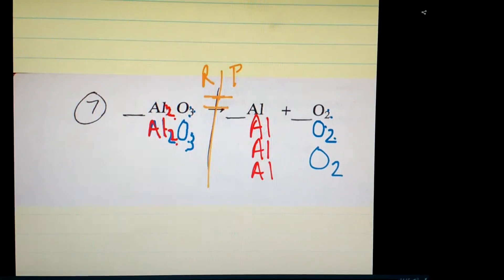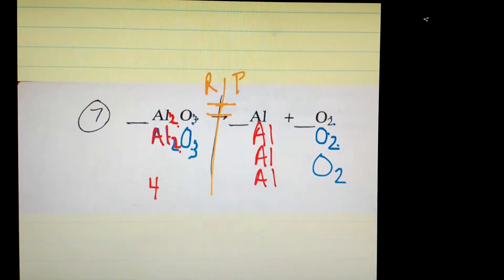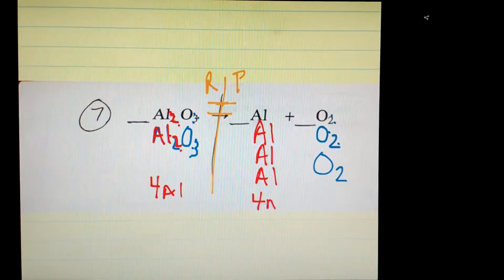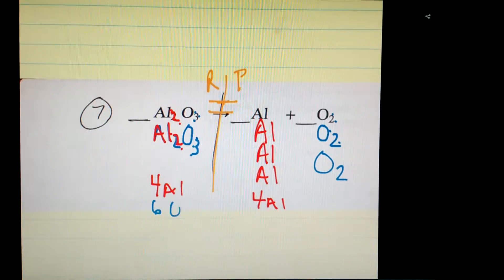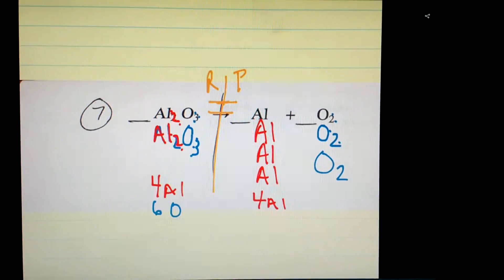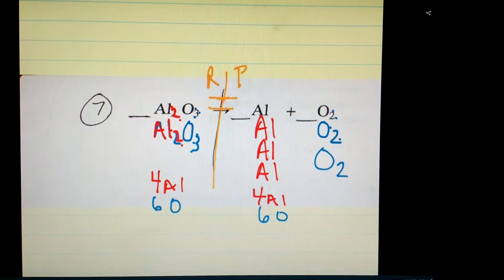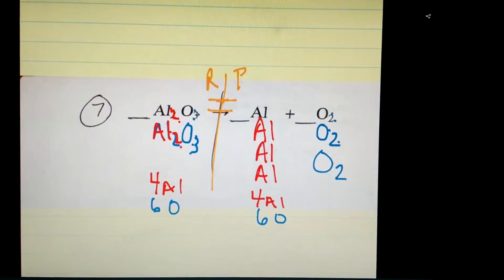Double check everything. Notice that we've still not written any coefficients yet. You have four aluminums on the reactant side, four aluminums on the product side. You have a total of six oxygens on the reactant side and a total of six oxygens on the product side. Once you're sure everything is balanced, it's time to write out the coefficients.